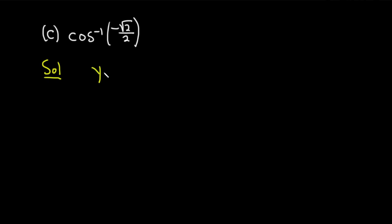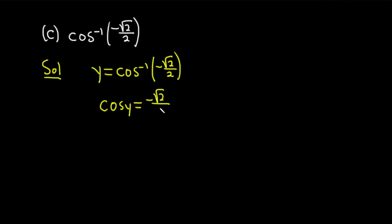As before, step 1: call it y. So y equals cosine inverse of negative √2/2. The same logic applies — the inverse cosine takes negative √2/2 and spits out y, and the cosine function takes y and sends it back to negative √2/2. This time y is in [0, π], which is the range for the inverse cosine — super important to memorize.